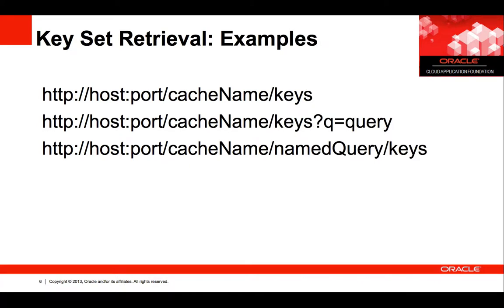Here are some examples of key operations. The first example retrieves the entire keyset from the cache. The second example retrieves a filtered keyset that satisfies the query. The last example uses a named query to retrieve a keyset. We'll talk about named queries later.